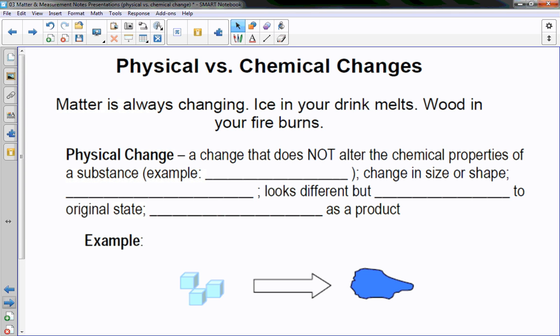Physical versus chemical change. Matter is always changing. Ice in your drink melts, wood in your fire burns. But a physical change is a change that does not alter the chemical properties. An example, cutting paper or a phase change, going from a liquid to a gas or a solid to a liquid. If I change in size or shape, it's the same material but in a different form. So I think I like chopping wood. I want to make the wood pieces small enough to fit in the stove. It's still wood when I'm done, it's just smaller.